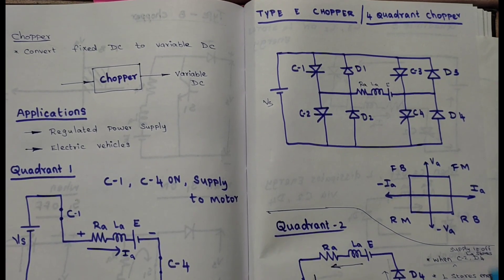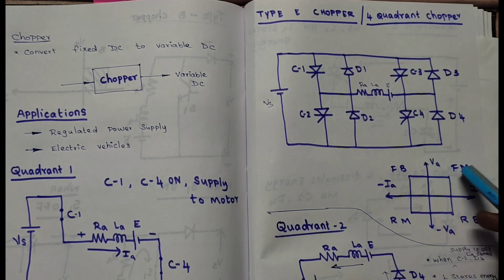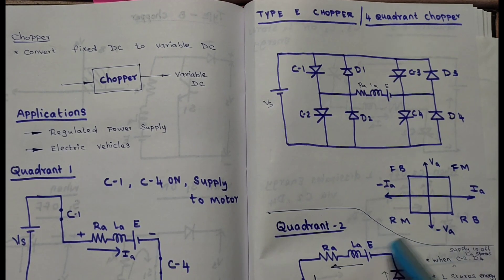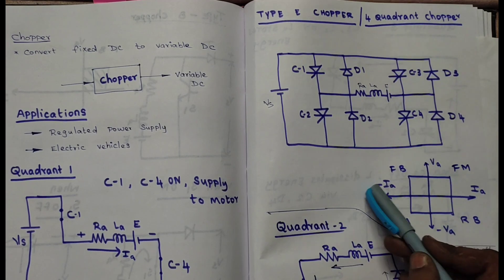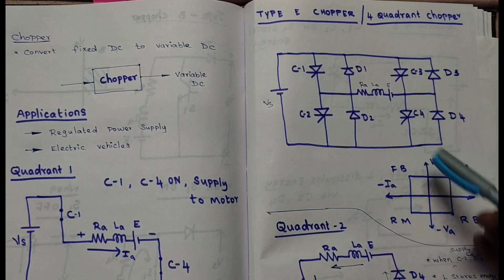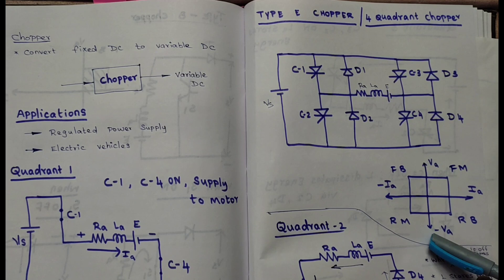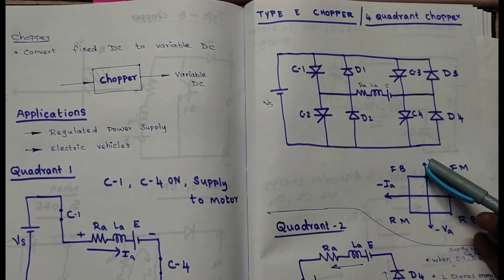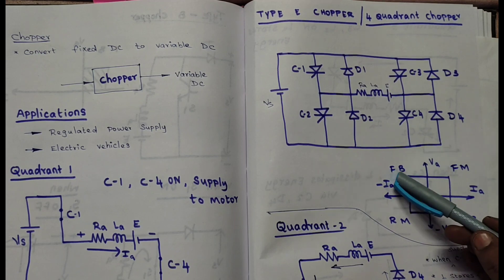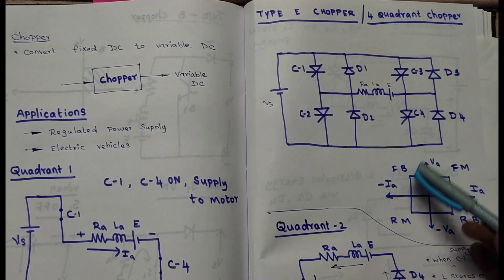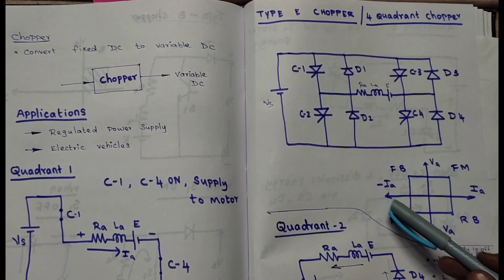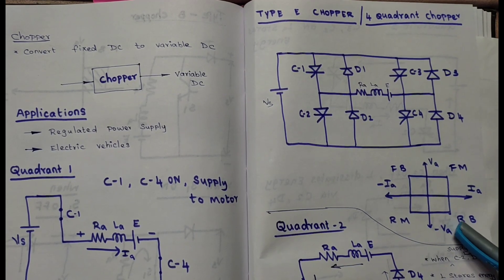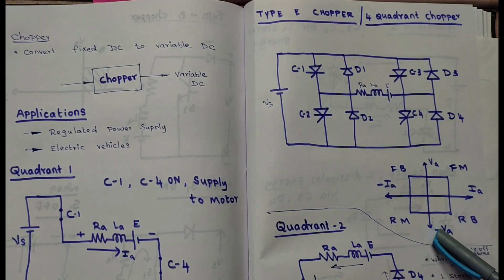In the 4-quadrant operation: the first quadrant is forward motoring, the second quadrant is forward braking, the third is reverse motoring, and the fourth is reverse braking. On the X-axis we take current and on the Y-axis we take voltage. In quadrant 1, both current and voltage are positive; in quadrant 2, current is negative and voltage is positive; in quadrant 3, both are negative; in quadrant 4, current is positive and voltage is negative.